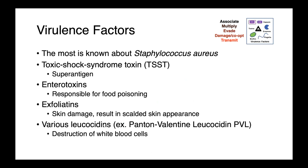Staph aureus produces toxic shock syndrome toxin, TSST, which is a superantigen. Most notably, TSST-producing Staph aureus was associated with certain types of tampons in the 1980s and 90s. Some strains of Staphylococcus aureus also produce enterotoxins, which are responsible for food poisoning — the foodborne illness seen shortly after consuming a contaminated food product, around one to two hours. It's important to differentiate this from foodborne infections, as Staph aureus food poisoning is actually an intoxication and doesn't require the presence of replicating organisms in the gut to cause disease.